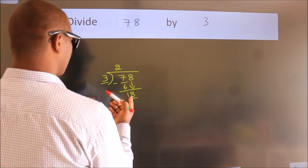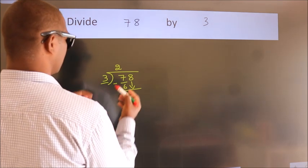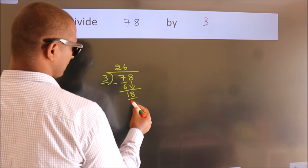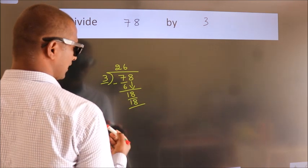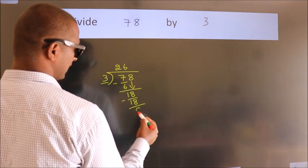When do we get 18? In the 3 times table, 3 times 6 is 18. Now we subtract. We get 0.